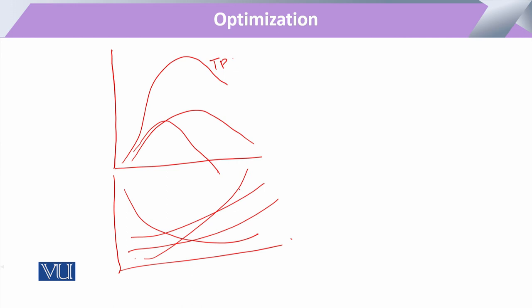The marginal cost curve and the marginal product curve are actually the inverse of each other. This means that at the point where the marginal product curve is at its maximum, the marginal cost curve will be at its lowest. Likewise, when the total production curve is at its maximum, the corresponding cost will be at its minimum. If total product, marginal product, and average product are each multiplied by output price P, then P×Y takes the shape of total revenue, the average product becomes average revenue, and marginal product multiplied by P becomes marginal revenue.